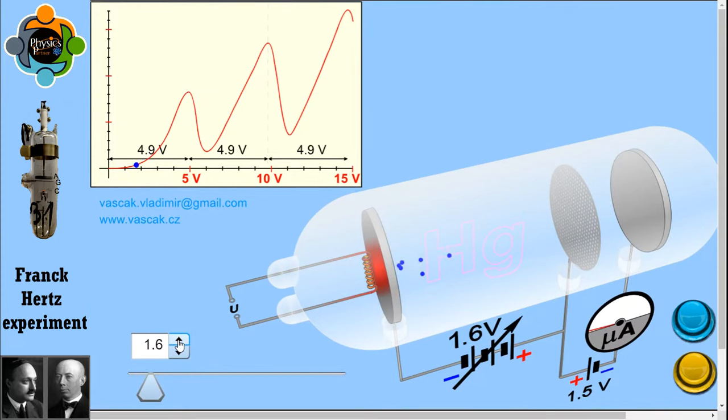With the help of thermionic emission, electrons are emitted by a heated cathode and then accelerated towards a grid. You can see here in this demonstration they are accelerated towards a grid which is at positive potential relative to the cathode.